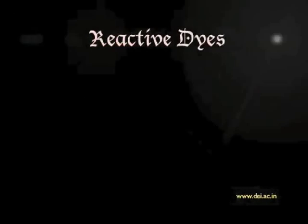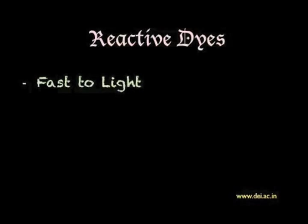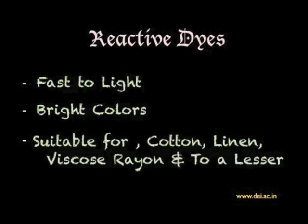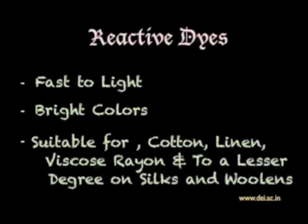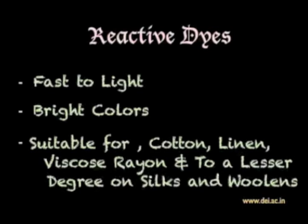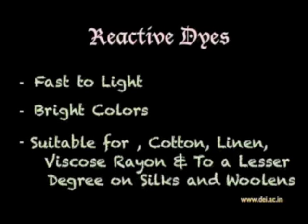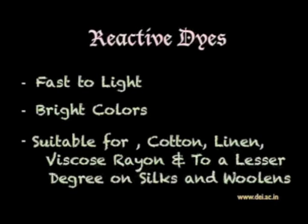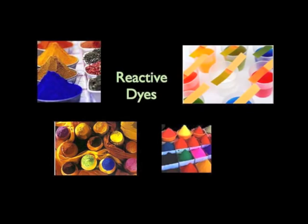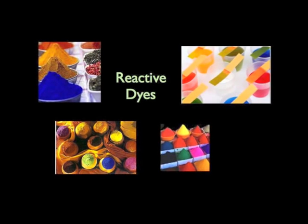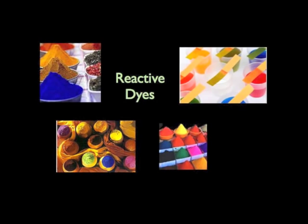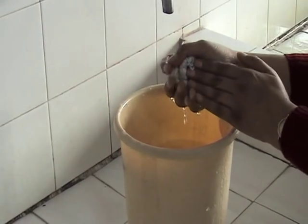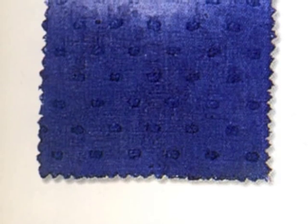Reactive dyes are fast to light and give bright colors on cotton, linen, viscose rayon, and to a lesser degree on silks and woolens. They are fixed on the fiber by direct chemical linkage — the dye molecules become part of the cellulosic molecule, so they are very fast to washing. These dyes penetrate readily, so are useful for dyeing bulky or closely bound samples, particularly those using folding techniques. Always wet out smaller, finely tied bundles, or the resist will be lost.